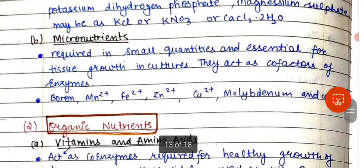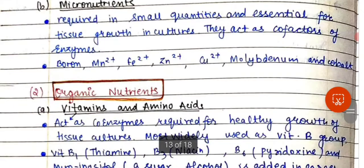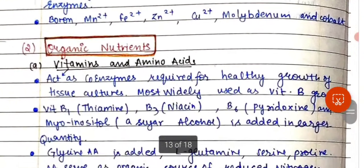Micronutrients are nutrients required in small quantities in the media, and they are essential for tissue growth in culture. They act as co-factors for enzymes. Examples include boron, manganese, iron, zinc, copper, molybdenum, and cobalt.